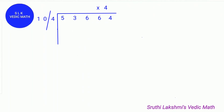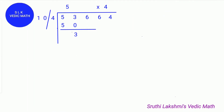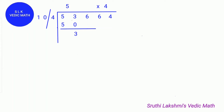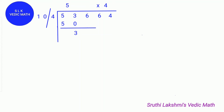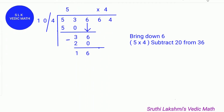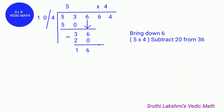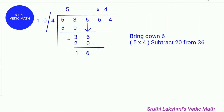First find how many tens can fit in 53. Five tens can fit in 53, so we write 5 on the quotient line and do 10 times 5, which is 50. Write 50 below 53. Next subtract 53 minus 50, which gives us 3. Next we bring down 6. Then we do the last digit of quotient times the last digit of the divisor: 5 times 4 is 20. So do 36 minus 20, which equals 16.